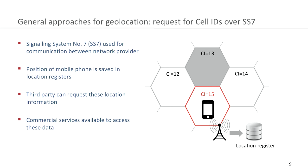Signaling System Number 7 is a protocol used for communication between network providers. Network providers need to know where and in which cell a mobile phone is located to enable communication, and these informations are saved in location registers. A third party can easily request these location information. I want to refer to the talk by Tobias Engel from two years ago which goes into the details of this method. There are also commercial services available to access this data.